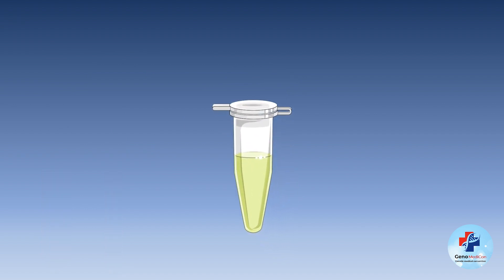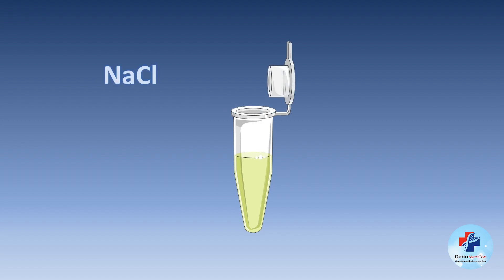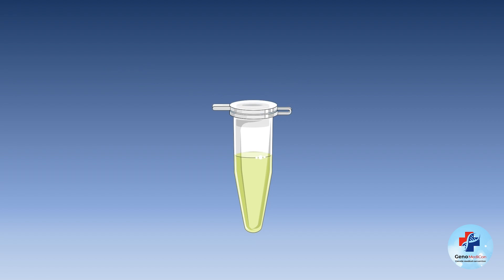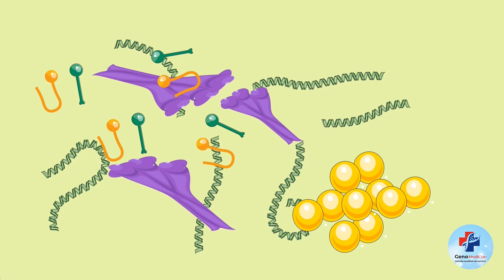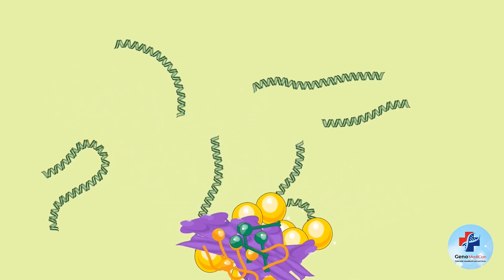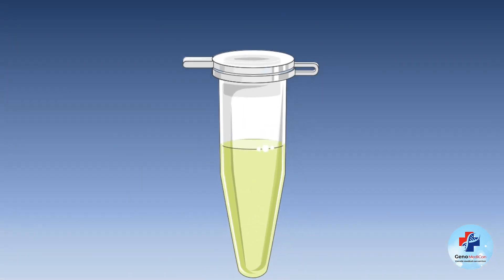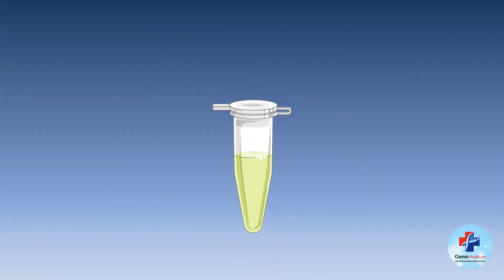In the next step, a high concentration of salt — often sodium chloride — is introduced to transform the lysate into a hypertonic solution. This strategic manipulation of salt concentration influences the solubility of macromolecules within the solution. Proteins, being integral cellular components, experience reduced solubility in this hypertonic environment, leading to their precipitation. This step is critical for separating proteins from the DNA of interest, setting the stage for subsequent purification.